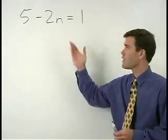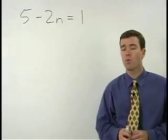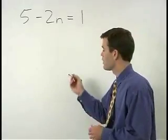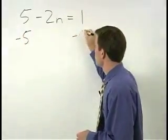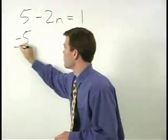To solve for n in this problem, the first thing we want to do is subtract 5 from both sides of the equation in order to get our n term by itself.